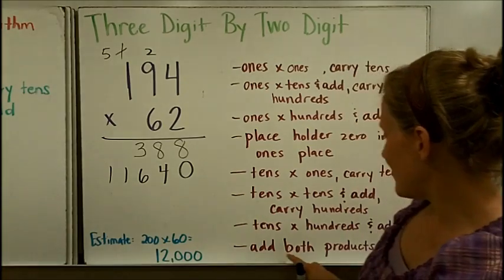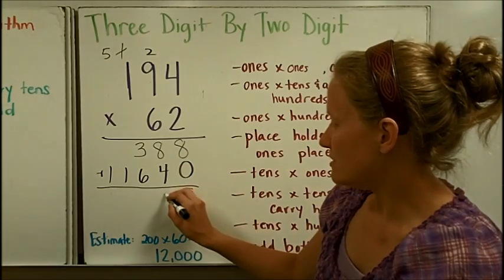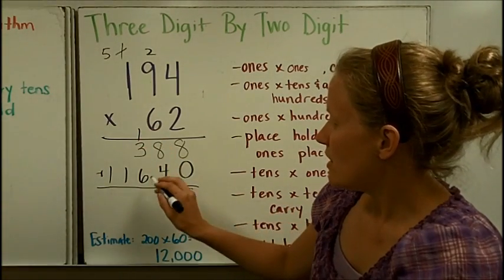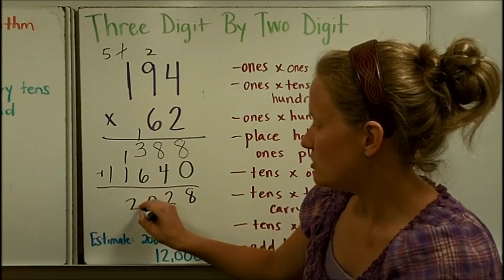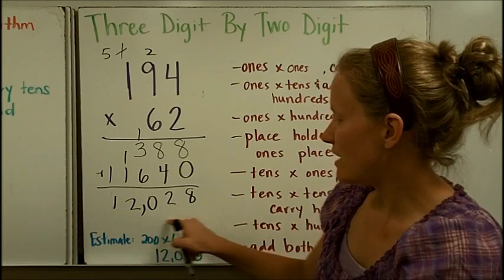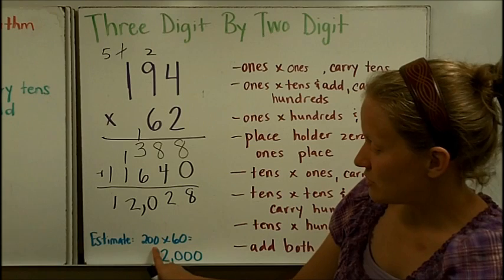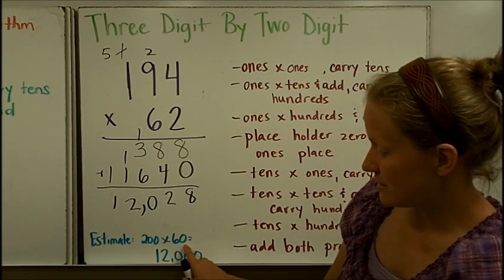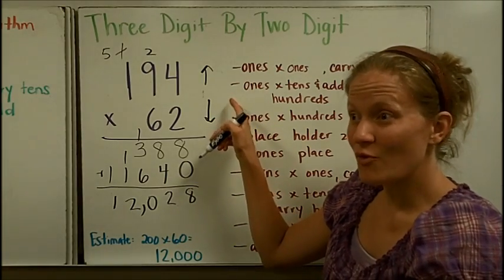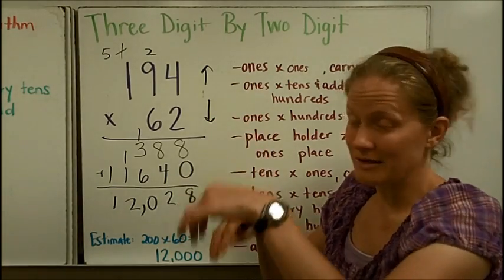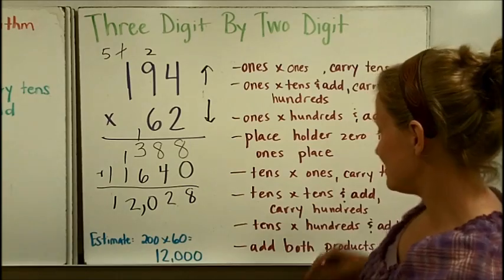And then, finally, I'm going to add both products. 8 plus 0 is 8. 8 plus 4 is 12. 1 plus 3 is 4, plus 6 is 10. 1 plus 1 is 2. And a 1. And I've got 12,028. My estimate down here, 194 rounded up to 200. 60 rounded down to 60. So, I round it up and I round it down. This tells me it's going to be more of an accurate estimate because I went in both directions with my numbers. And I got 12,000, which is very close to the exact answer.